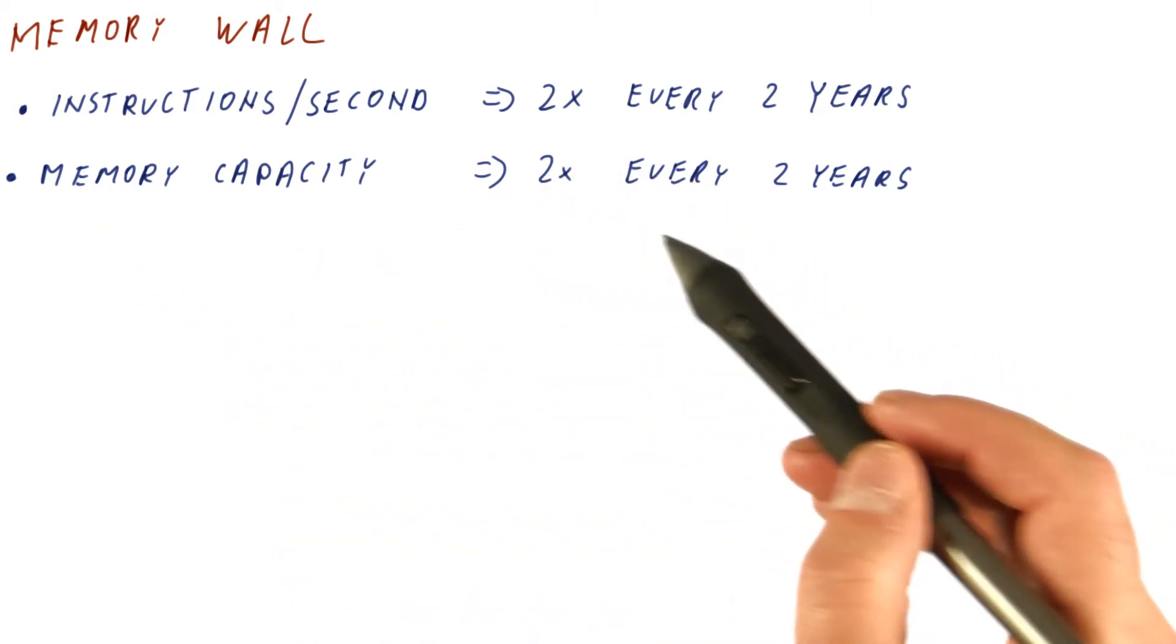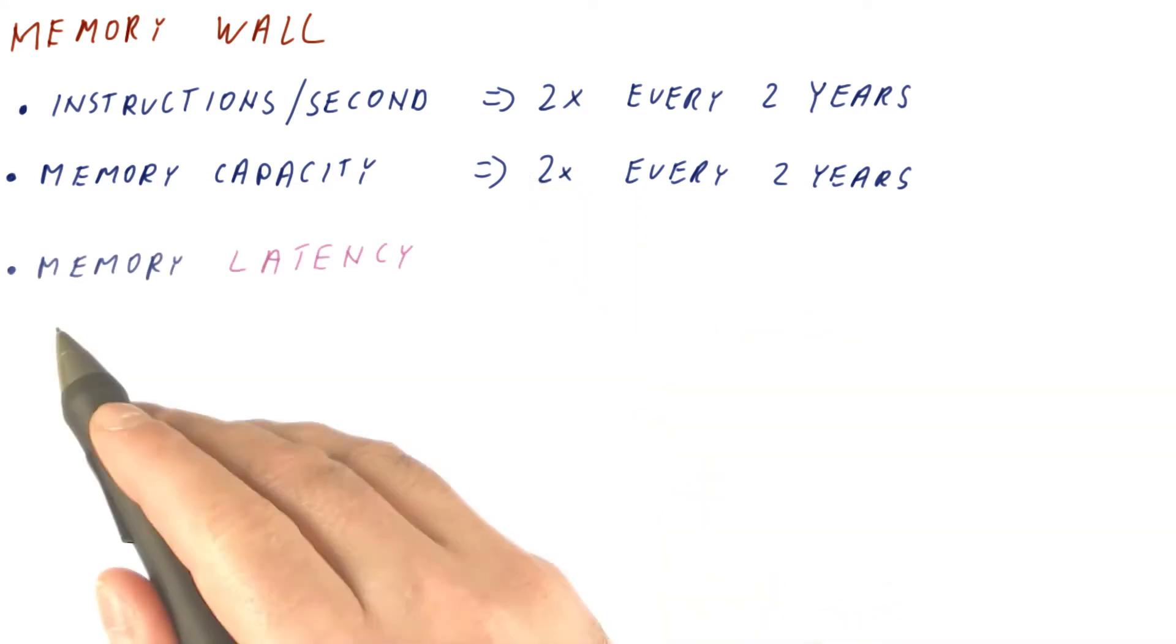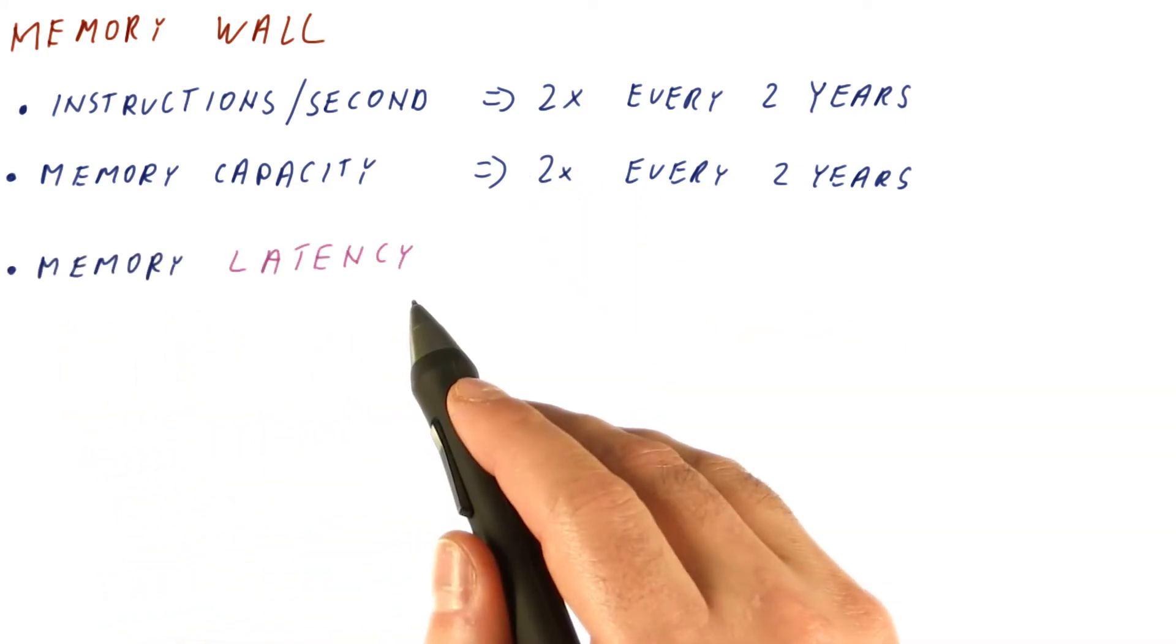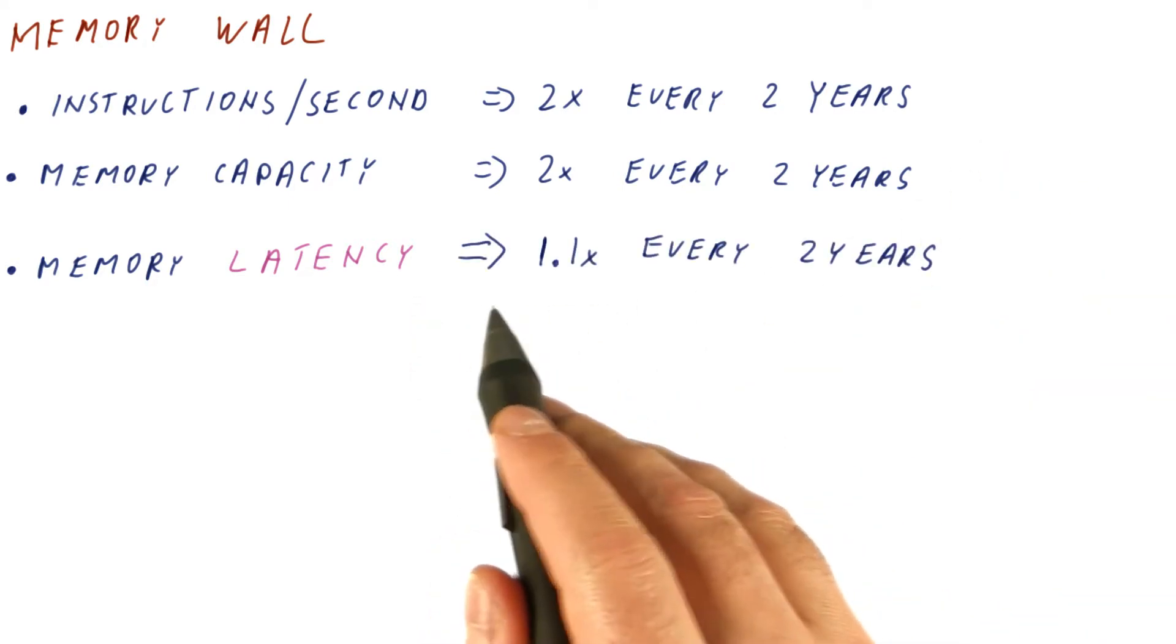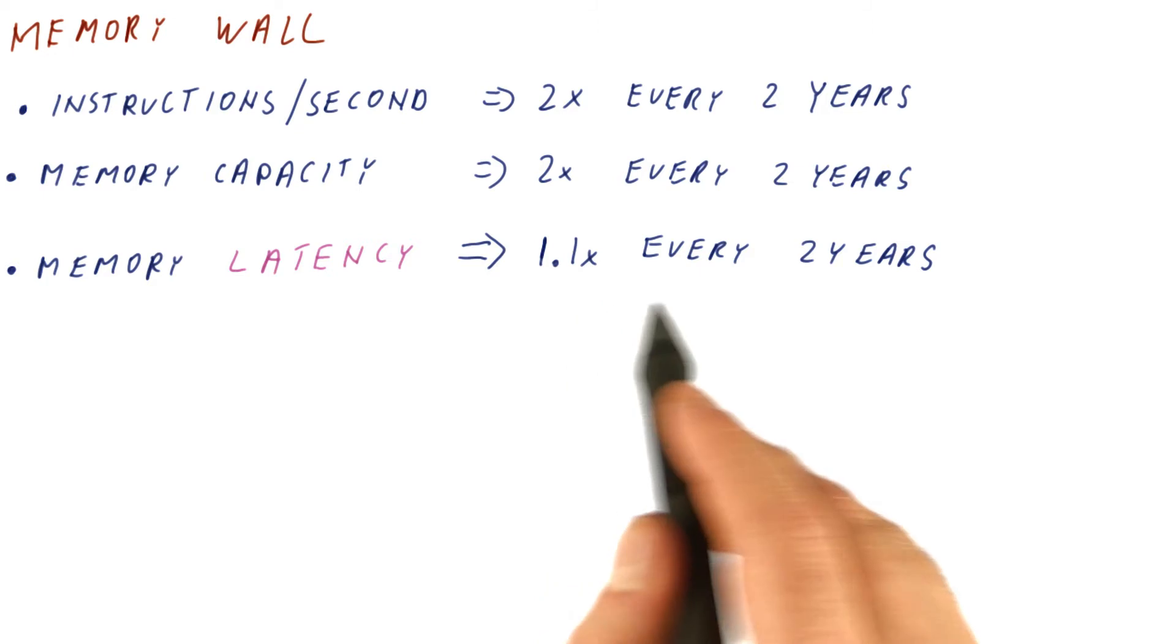But memory latency, that is, how long does it take to do a memory operation, has only been improving about 1.1 times every two years.